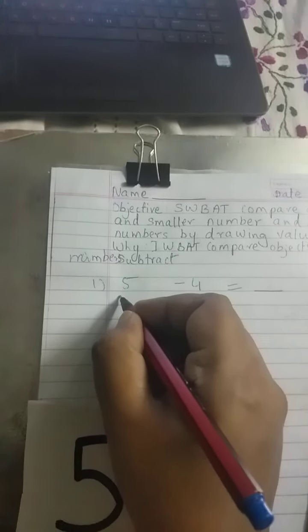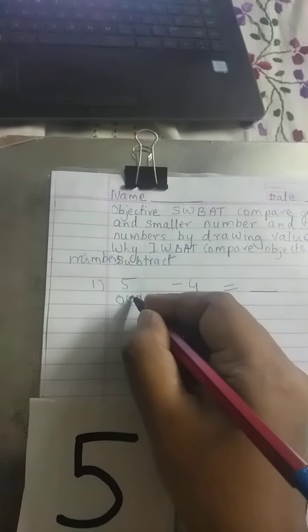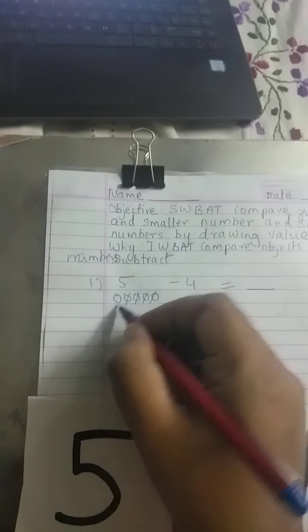So, we are going to draw value. Five. One, two, three, four, five. और हम क्या करेंगे? Minus four. मतलब four cut करेंगे. One, two, three, four. So, how many remain? One.